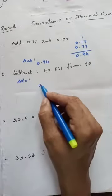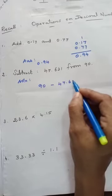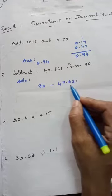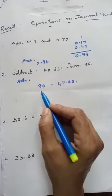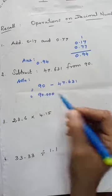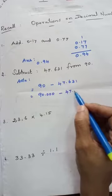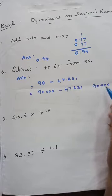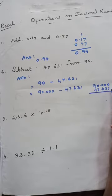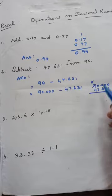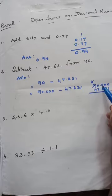Second problem: subtract 47.631 from 90. So you write 90 first — 90 minus 47.631. Here 90 is a whole number but we have three decimal places, so first you write it as 90.000 minus 47.631. Now you subtract — from zero, 1 cannot go, so you have to borrow. Here all zeros, so from here you borrow.